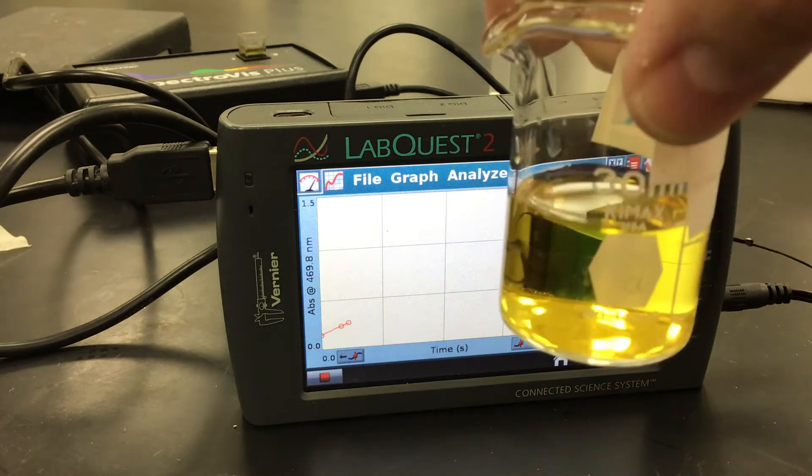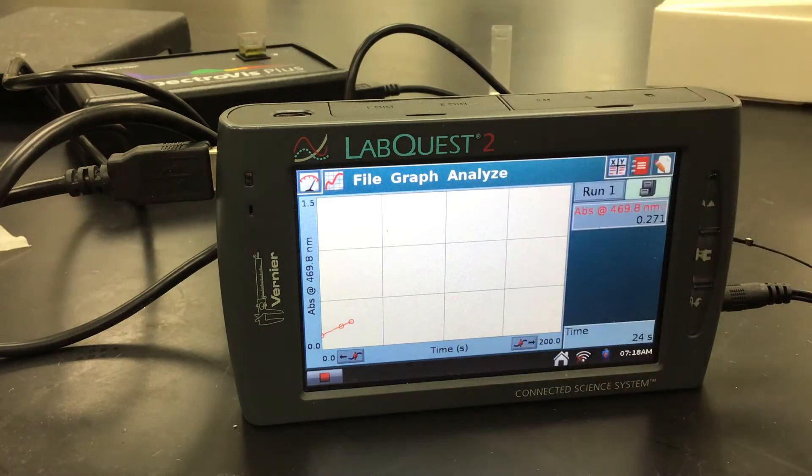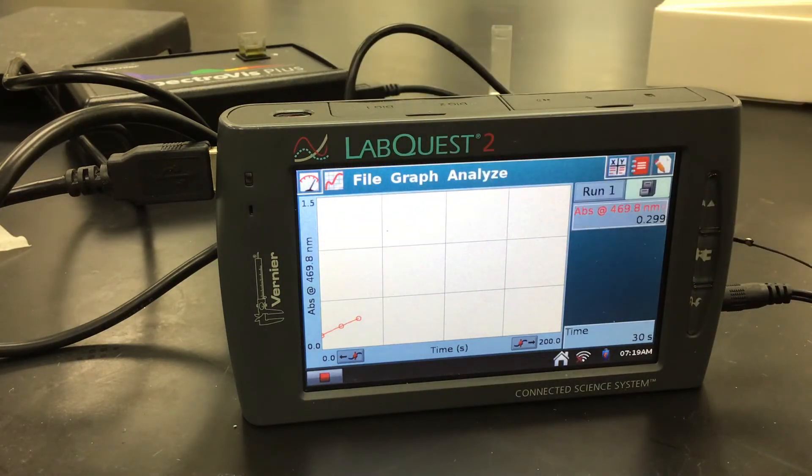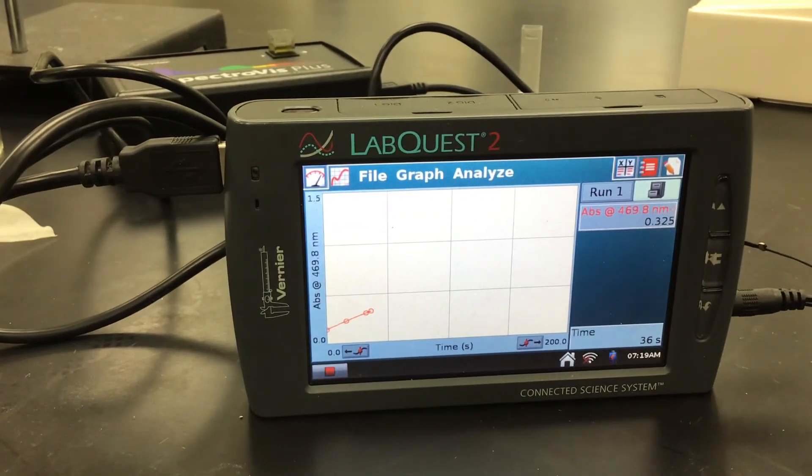We can actually kind of see that in the beaker as well. This is darker than our solution of iron and it's going to continue to get darker. All right. So we're going to let this run for 200 seconds. And then we'll have our graph. We're going to do two more sets of data.